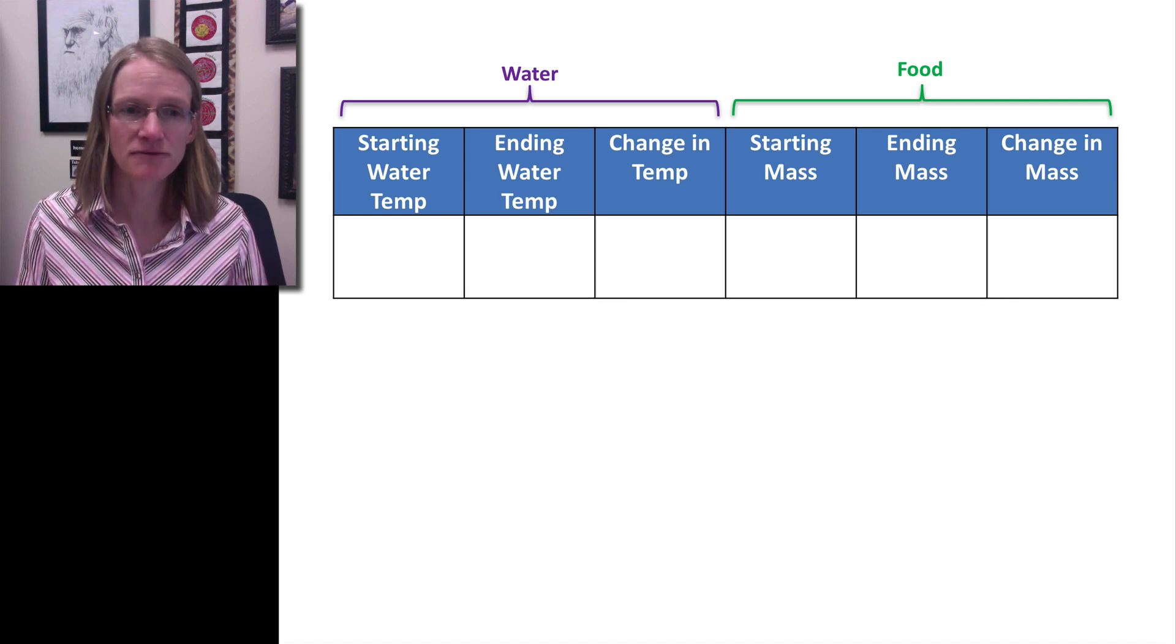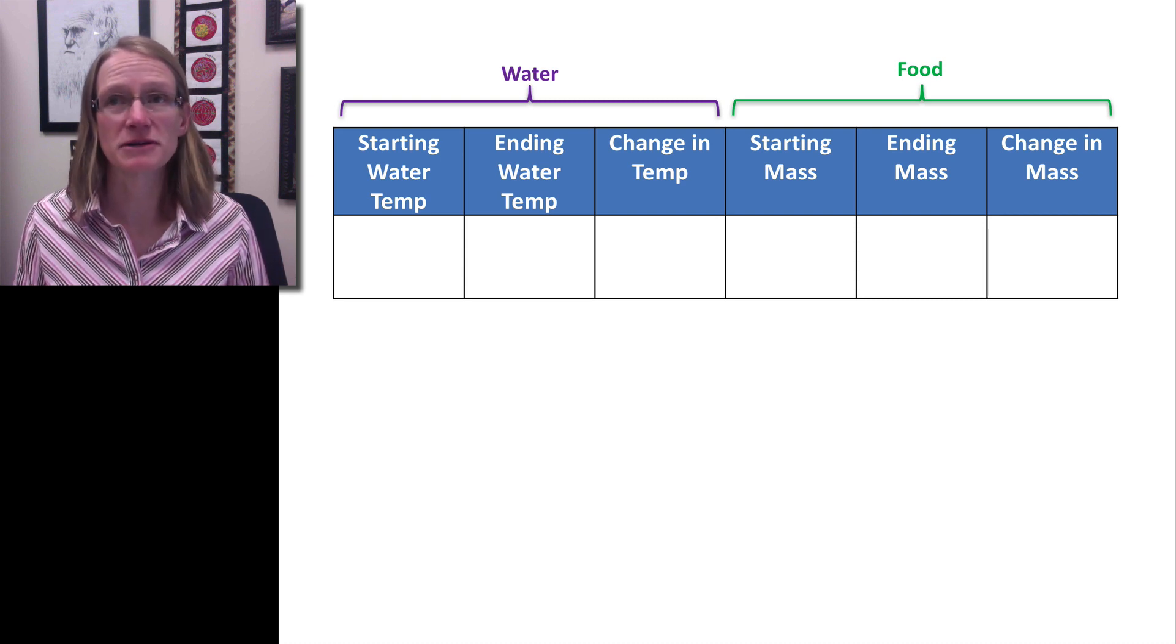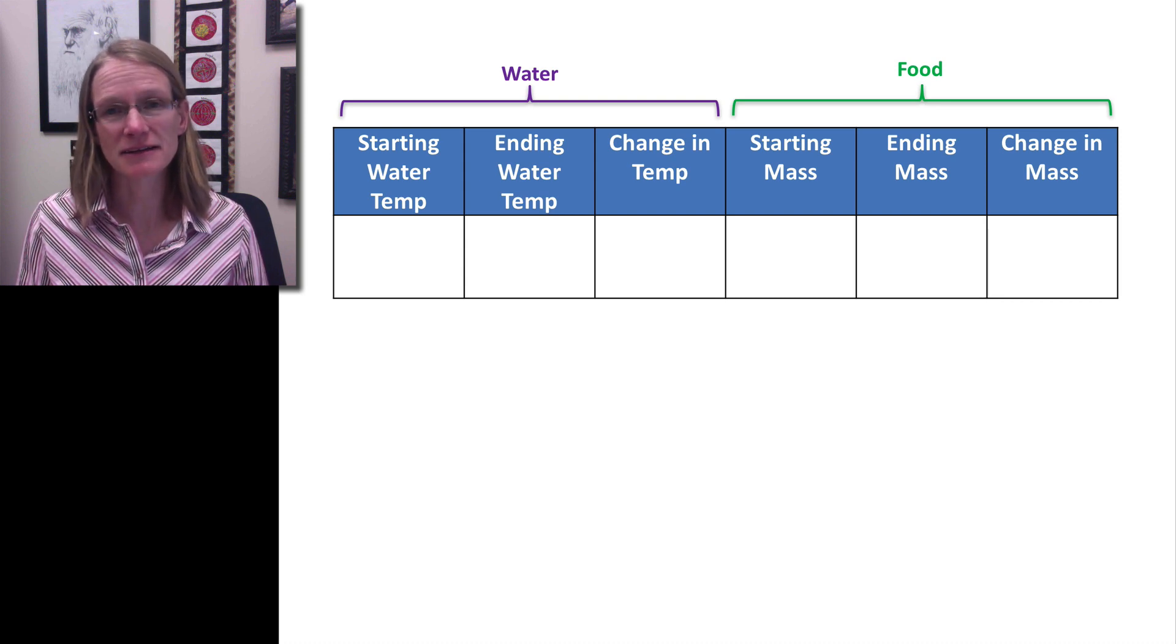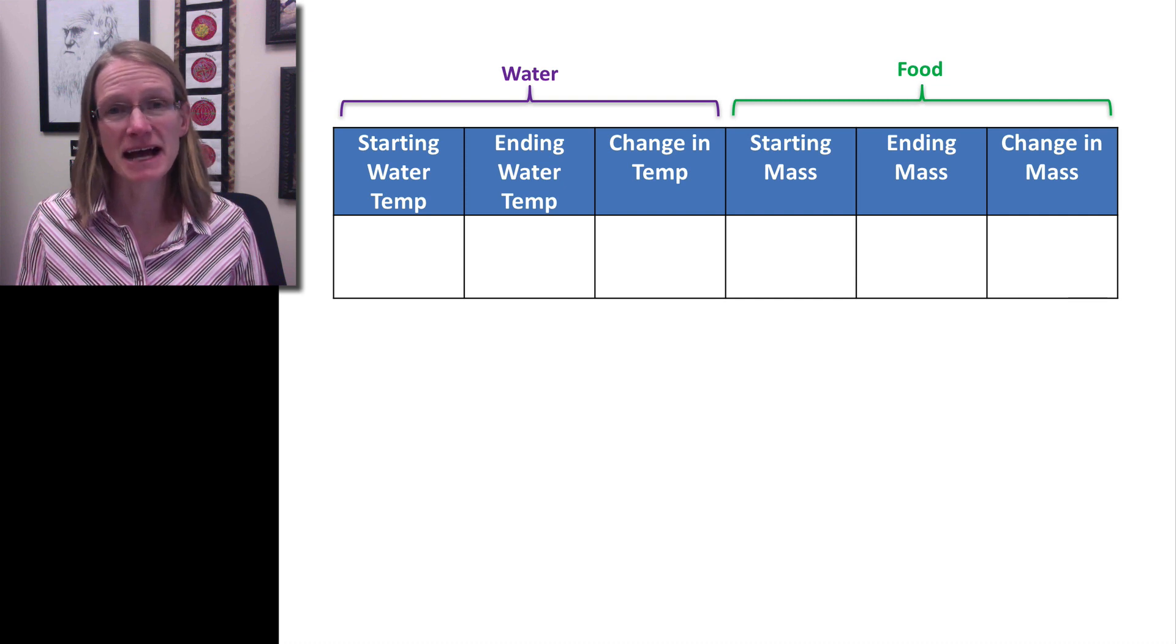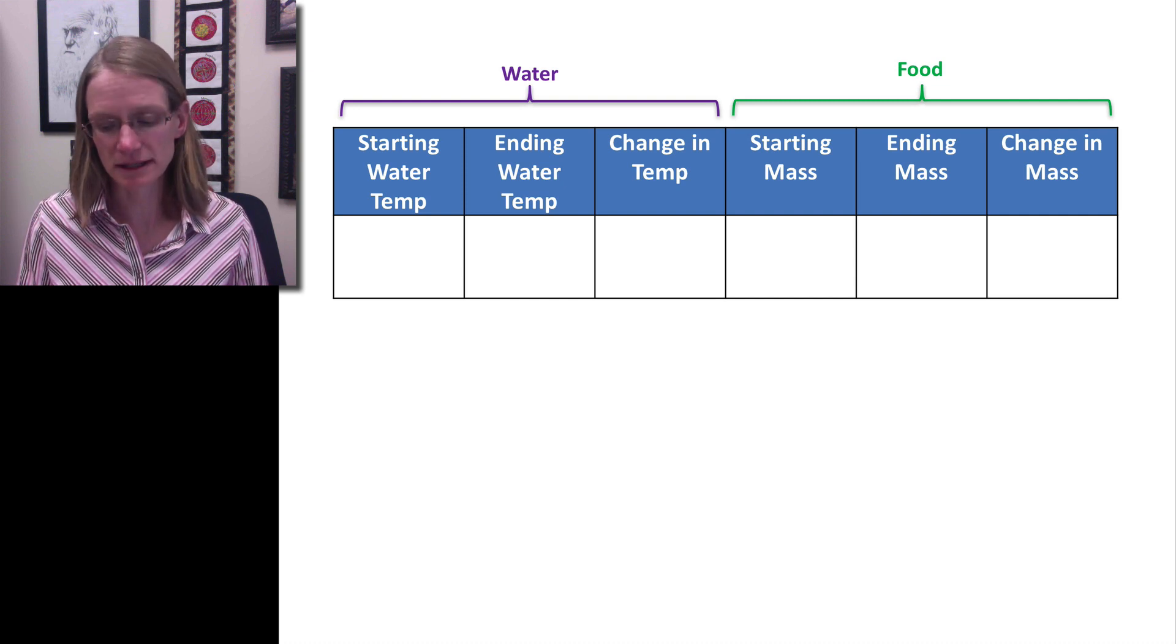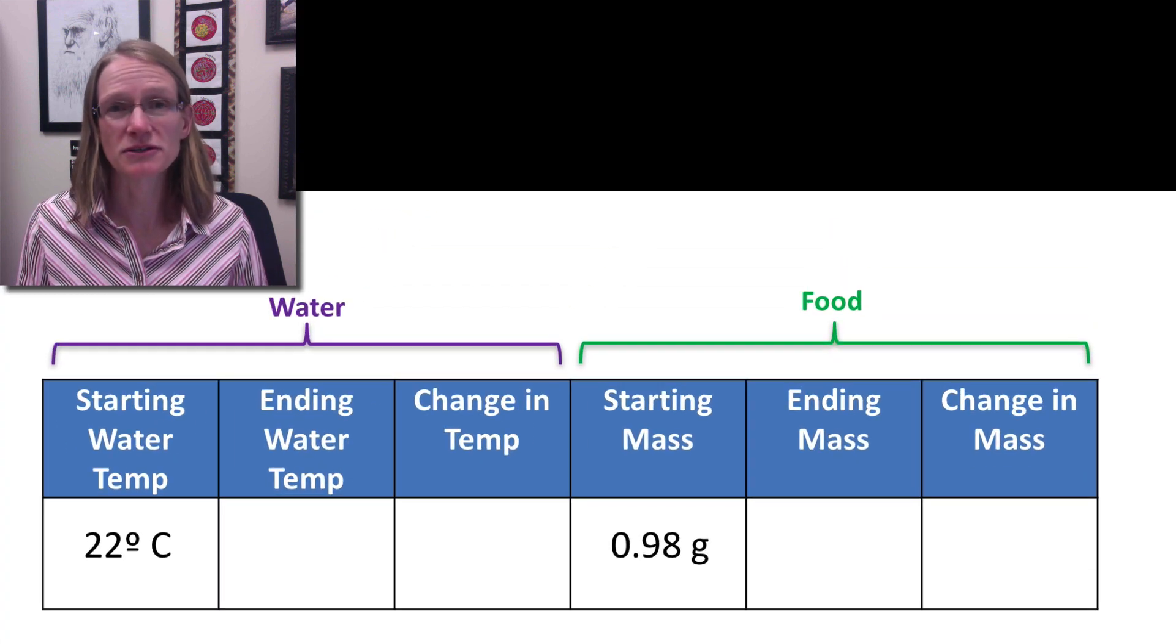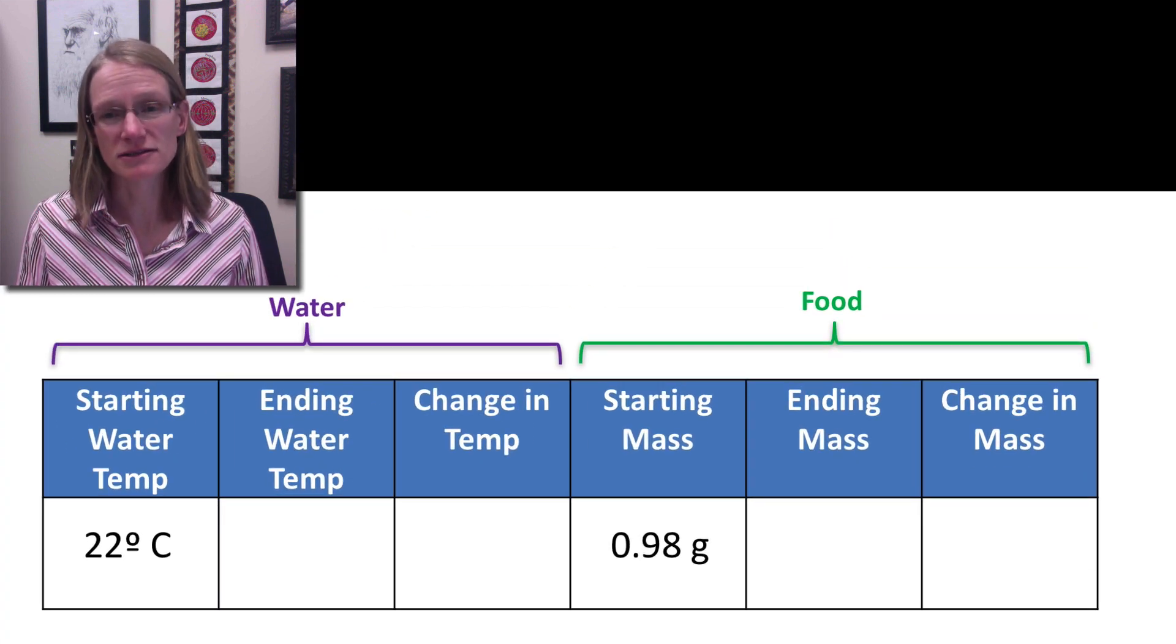And so the first four blocks, if you will, talk a little bit about the water, the things we measured with water. Specifically, we were looking at temperature. We wanted to know where it started, where it ended, and then the ones to the right talk a little bit about our food and specifically the mass of that food. In our case, it was a walnut. And so we know if we start filling in the data that we started out with water that was about 22 degrees C and the walnut started about 0.98 grams.